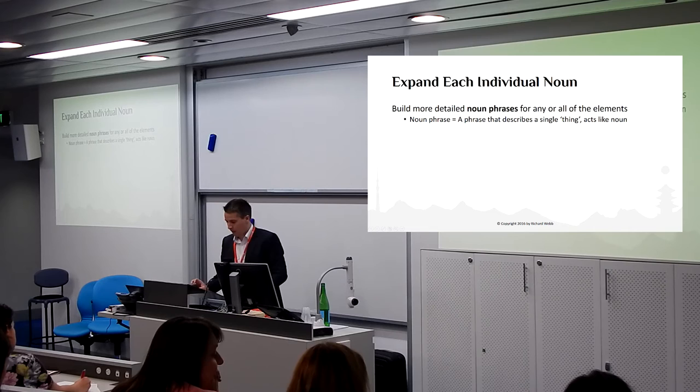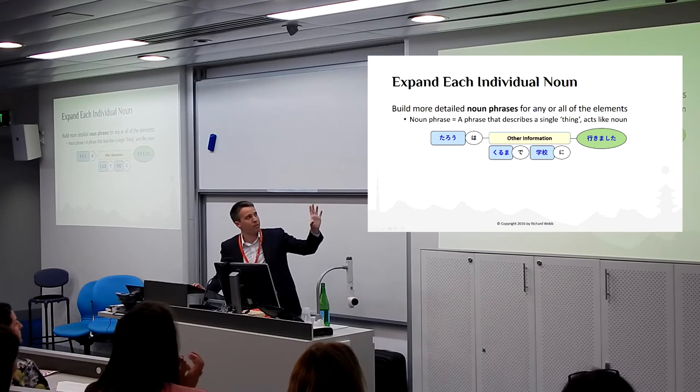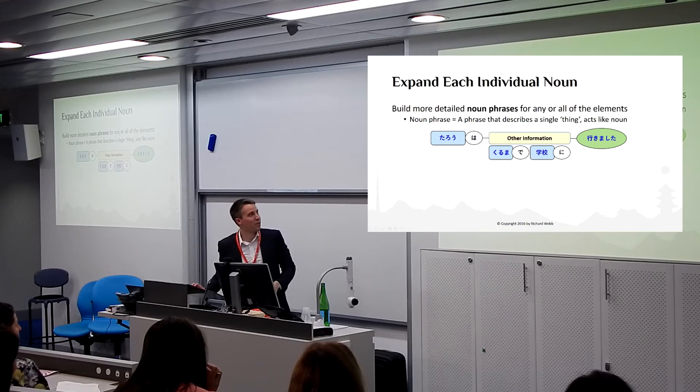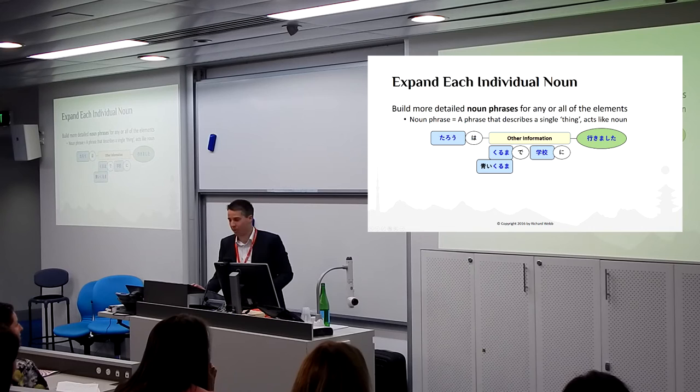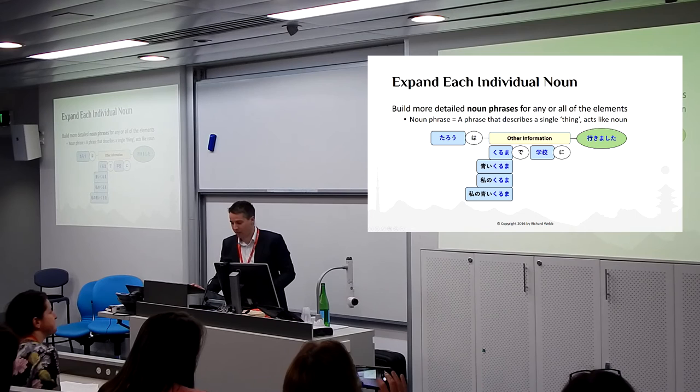So if we take a simple sentence like 太郎は車で学校に行きました, we can expand any of the blue parts. We can take 車 and say 太郎は青い車で学校に行きました, or 太郎は私の車で学校に行きました, or 太郎は私の青い車で学校に行きました, or 太郎は私が昨日買った青い車で学校に行きました. We're just adding more information to this noun.